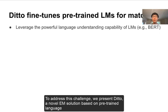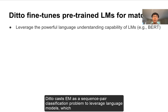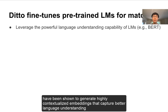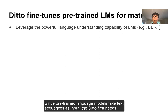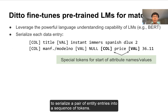To address this challenge, we present DITTO, a novel entity matching solution based on pre-trained language models such as BERT. DITTO casts entity matching as a sequence pair classification task to leverage language models, which has been shown to generate highly contextualized embeddings that capture better language understanding compared to traditional word embeddings. Since pre-trained language models take sequences as input, DITTO first needs to serialize a pair of entity records into a sequence of tokens.